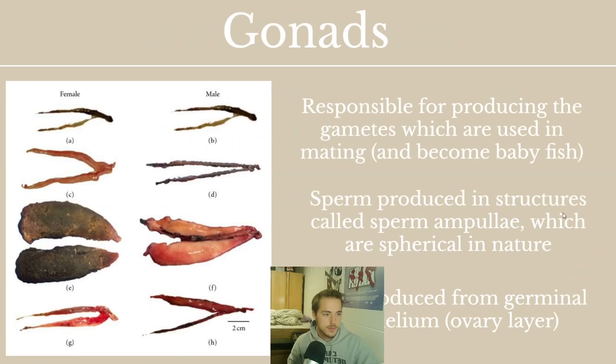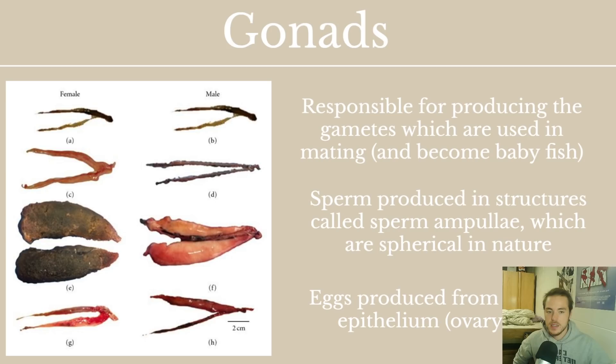Gonads are responsible for reproduction. Gonad is the general term for testes or ovaries — the structures that create gametes (sperm and eggs) used in mating. Sperm are produced in structures called sperm ampullae, which are small spherical structures. Eggs are produced from the germinal epithelium, a layer within the ovary. Internally, ovaries and testes are actually fairly similar in appearance across life stages.